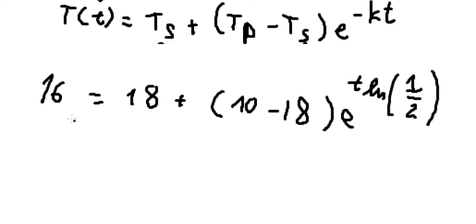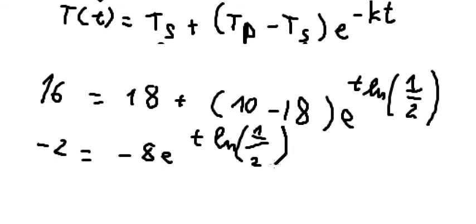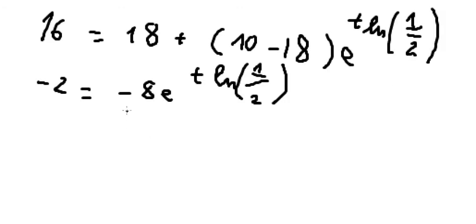So 18, we put on the left. 16 minus 18, we have negative 2. This one, we have negative 8. So we divide both sides by negative 8. We have 1 over 4.